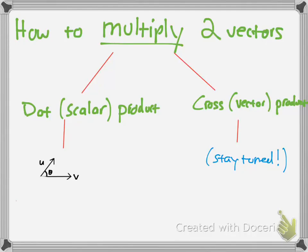Hello, YouTube. Today we're going to be going over how to multiply two vectors, so there's two ways you can do that. You have the dot product when you're dealing with scalar, and you have the cross product when dealing with vectors. So stay tuned for the vector portion for cross product, but today we're going to be going over dot product for scalar.